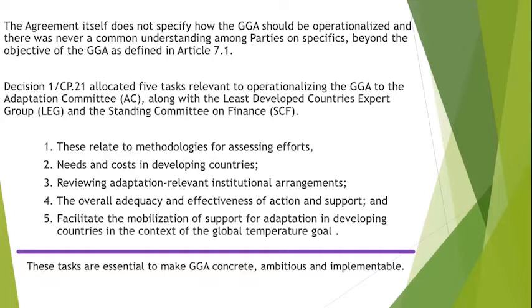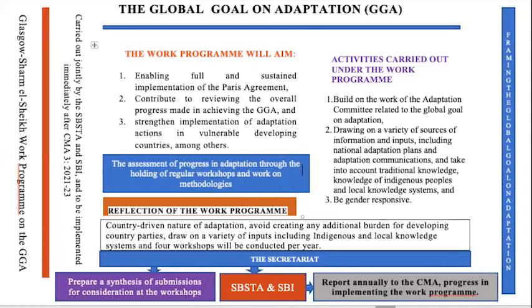These five tasks were essential to make the global goal on adaptation concrete, ambitious, and implemented, and they were undertaken by the Adaptation Committee, along with the Least Developed Countries Expert Group and the SCF. The Glasgow Work Program on Adaptation is the framework of the work program, framed within two years, and is currently carried out jointly by the SBSTA and SBI, to be implemented as from CMA3 in 2021, to be concluded in 2023.